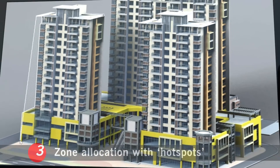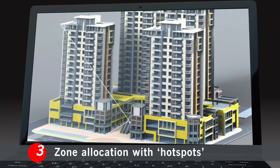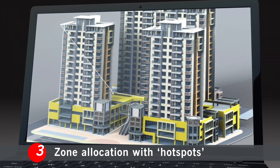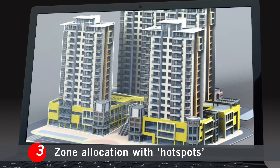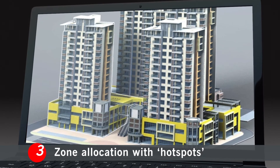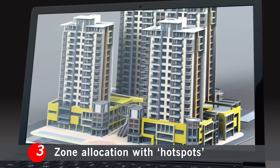Step 3: Now comes zone allocation. This simply involves drawing hotspots onto the relevant maps, plans or images.